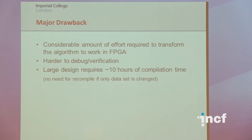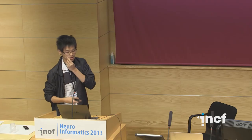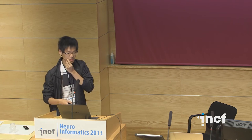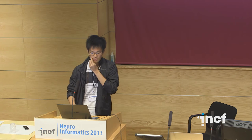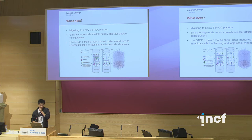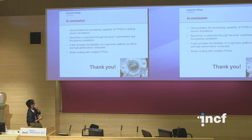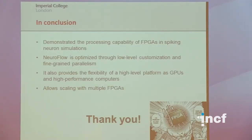In summary, the FPGA is introduced as a very attractive platform for neural simulation. We have introduced some low-level customization and fine-grained parallelization, but also can do high-level computation. The major drawback is that it's hard to convert an algorithm from CPU-based to FPGA-based — you need to do some parallelization or streaming effort to avoid loops in your programming. It's also harder to debug. The major drawback for most people is that it requires 10 hours of compilation time. But if you use the same design and just change the dataset, you don't need to compile it again.